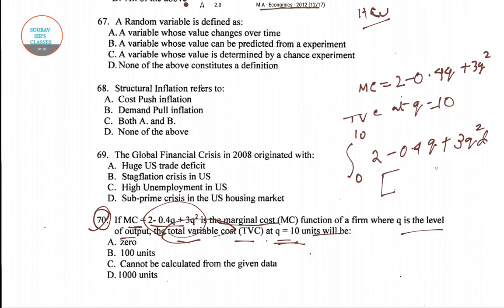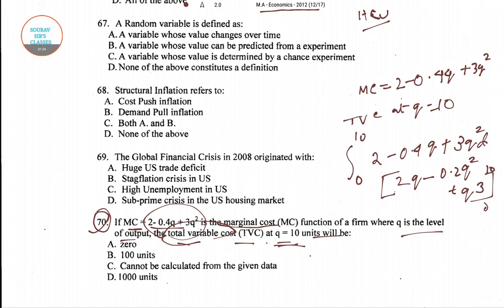By integrating, we get 2Q minus 0.2Q squared plus Q cubed, evaluated from 0 to 10. Putting in the values, we get 20 minus 20 plus 1000, which equals 1000 units.